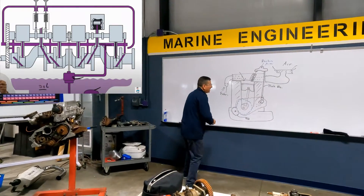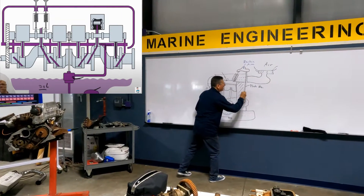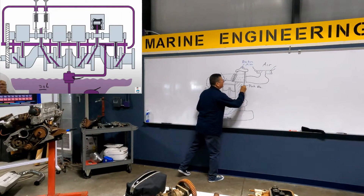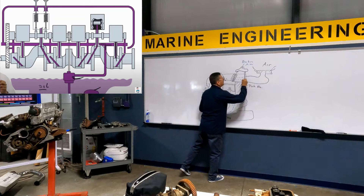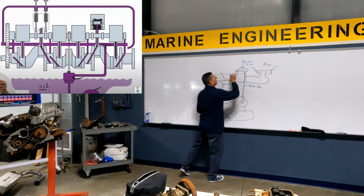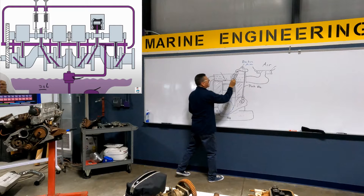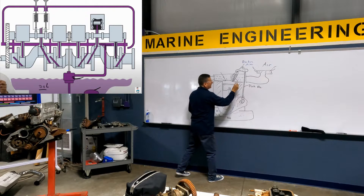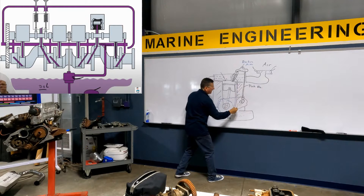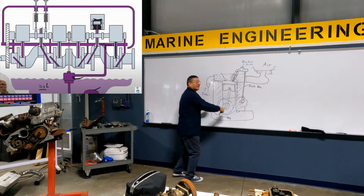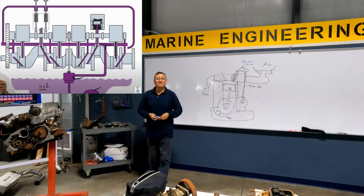Normally the oil goes internally through this pipe — the push rod. It enters here, lubricates this, lubricates the valve, and here it goes through other internal cavities and goes by gravity, drops here again into the oil pump.